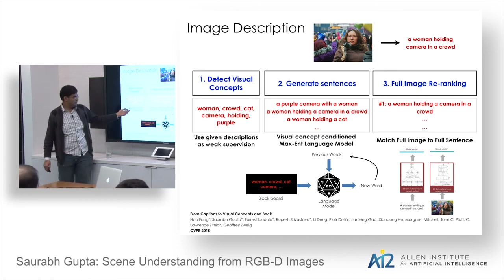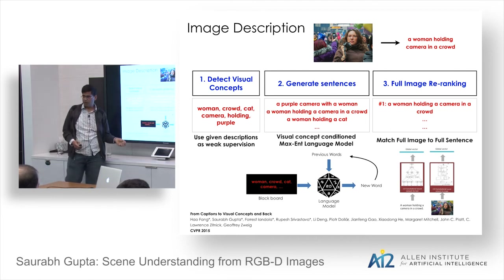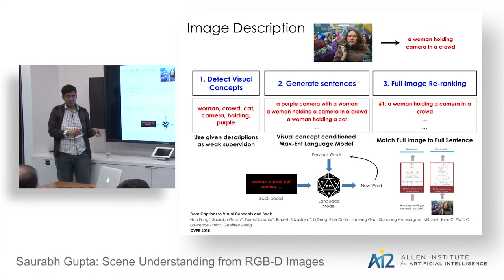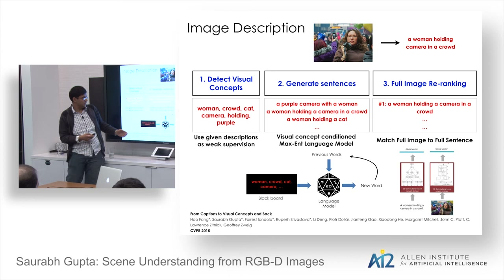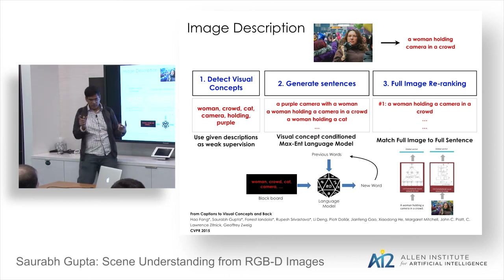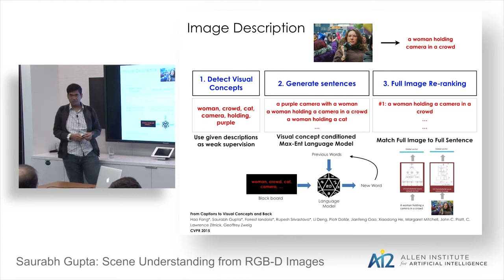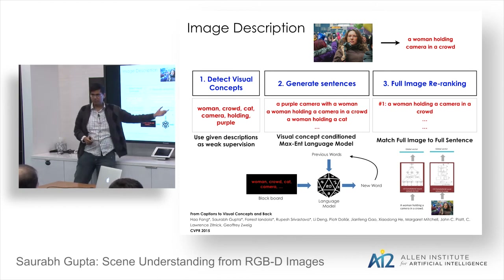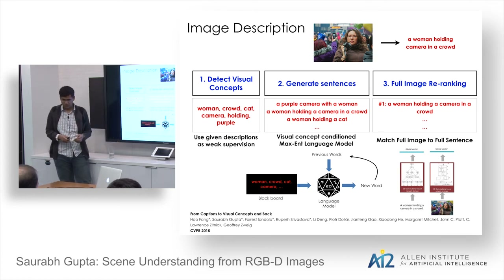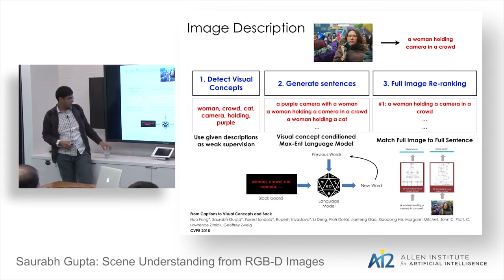Once visual concepts are detected, a language model strings these concepts together into sentences, generating a large number of candidates. A re-ranking step then looks at the sentence and full image together, ranking sentences so they maximally match the image. The first part does local understanding; the re-ranking does global understanding, ensuring descriptions reflect what's actually happening in the image.